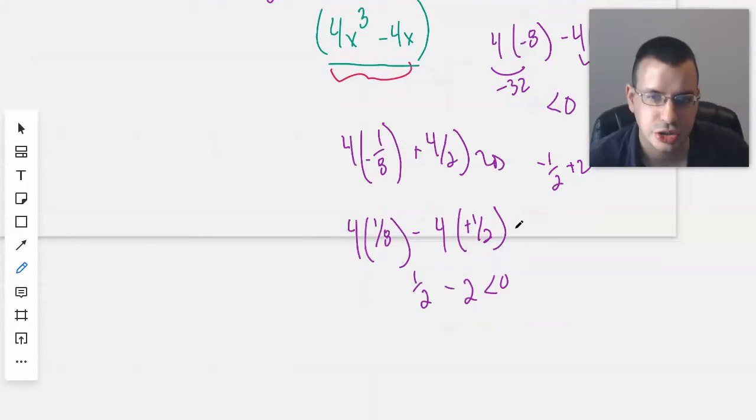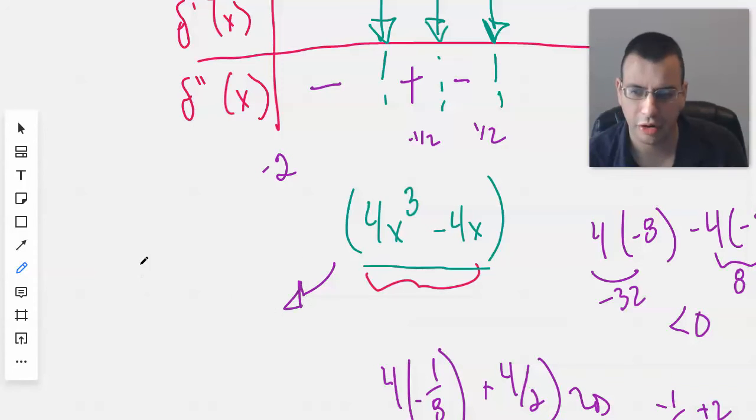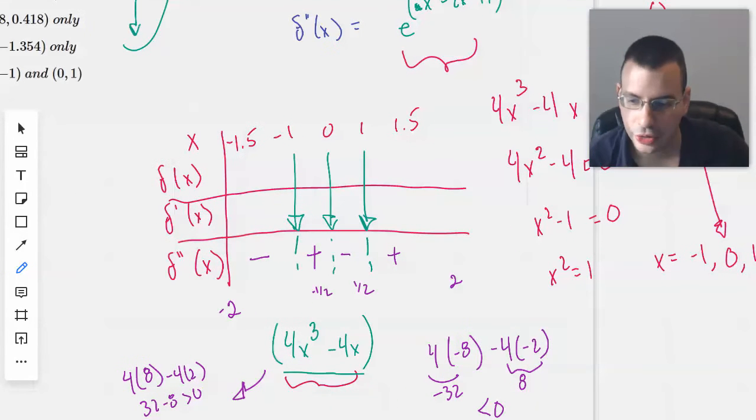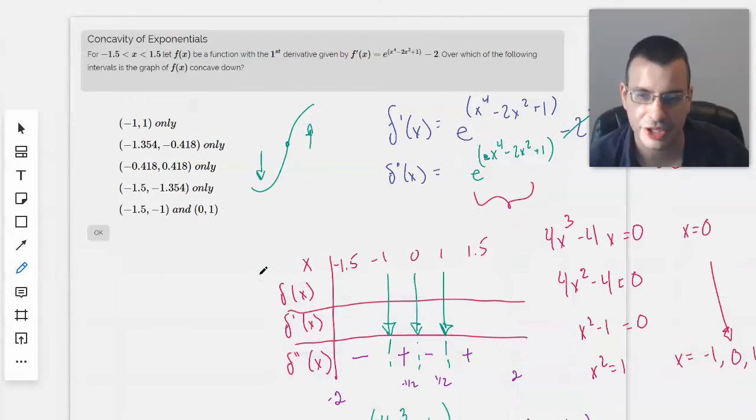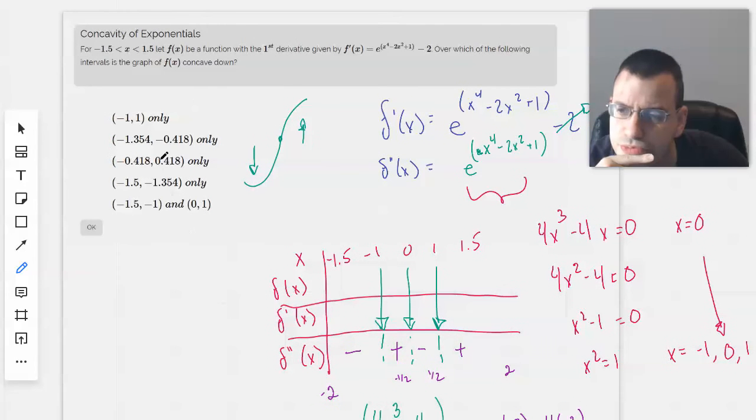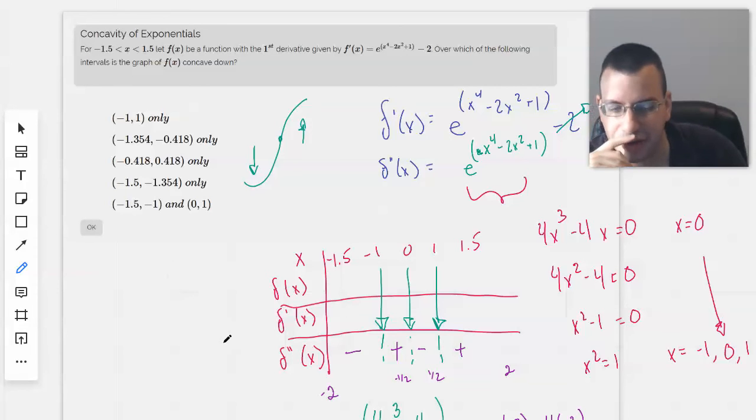Plug in 2: 4(2)^3 = 32, minus 4(2) = 8. So 32 - 8 > 0, this is positive. Now looking at this, we can determine our interval of concavity. We probably could've also just used our calculator.